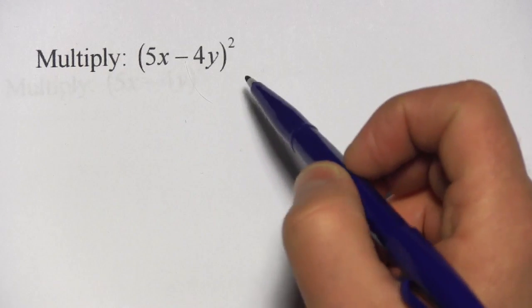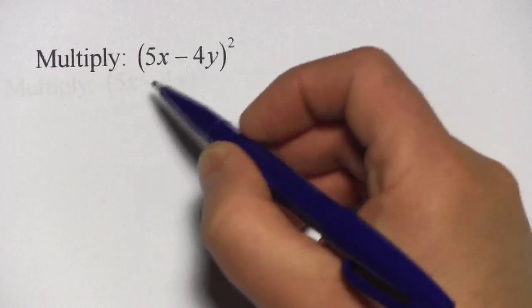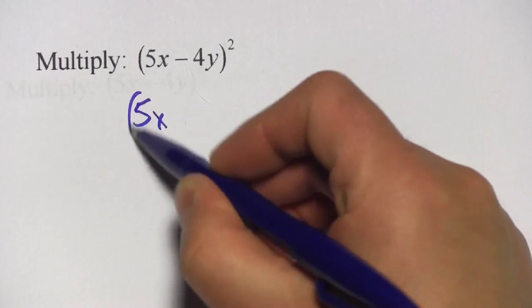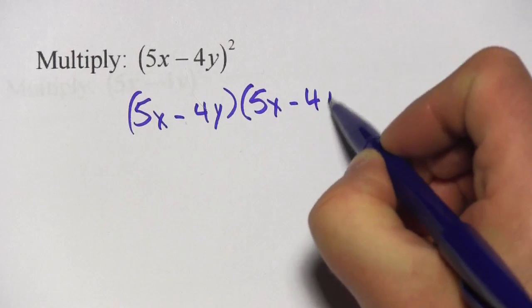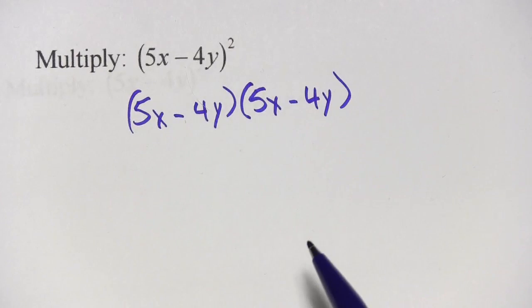The first thing to do is to remember that when you square something, you multiply it by itself. So this problem is really 5x minus 4y times 5x minus 4y. That's the same thing as 5x minus 4y squared.